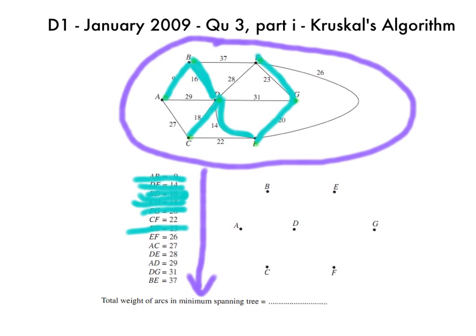So the thing the question asks us then to do is to go down the bottom and draw the minimum spanning tree for the examiner, to show them what we've created. So we just draw that there, like that.